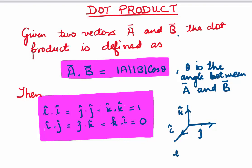What if we have to find the dot product of i and i? Using the formula A dot B, it gives us modulus of i times modulus of i times cosine of the angle between i and i. The angle is zero, cosine of zero is one, and modulus of i is one because they are unit vectors. So we get one. That is why i dot i, j dot j, and k dot k all equal one, because the angle between them is zero.